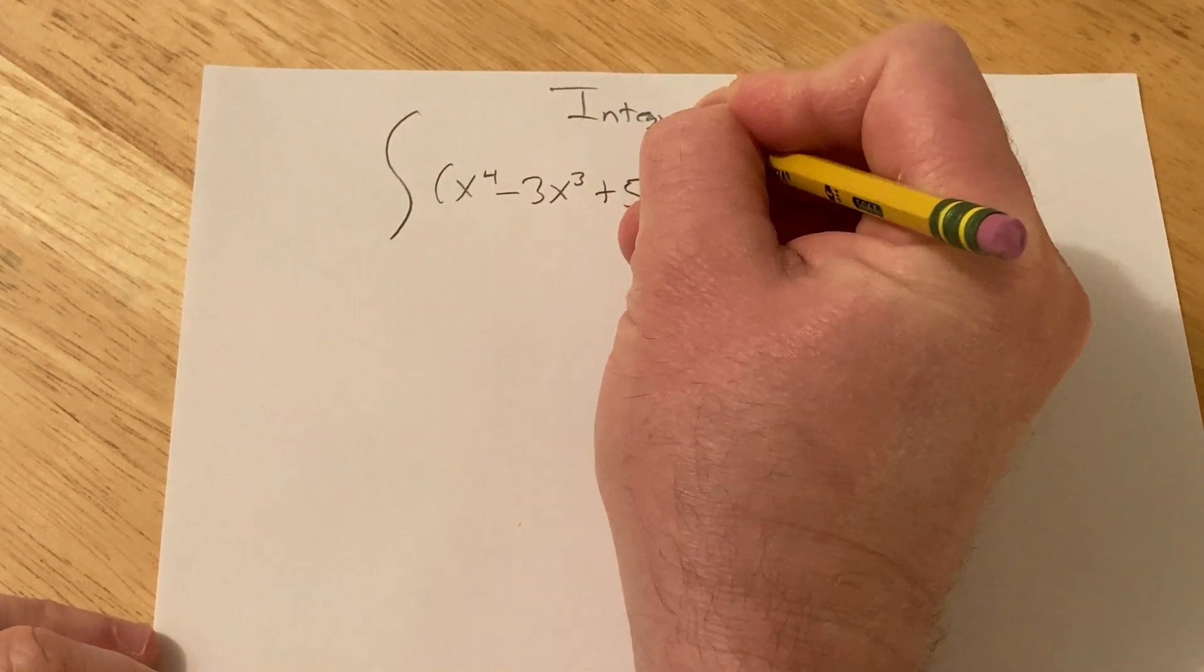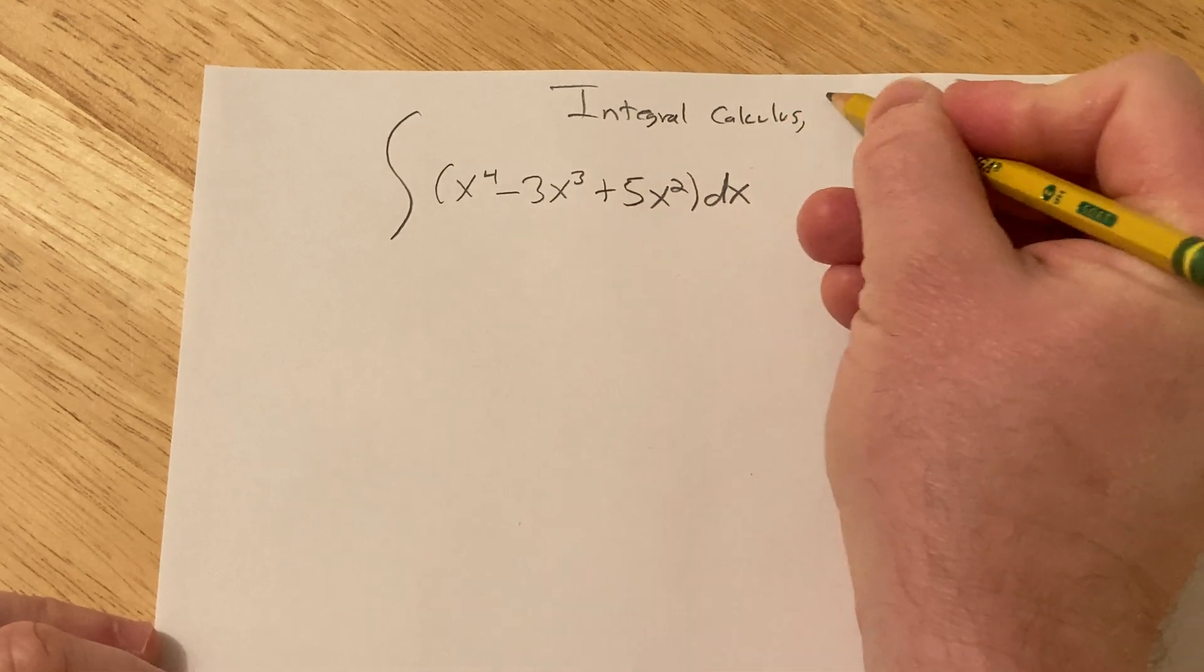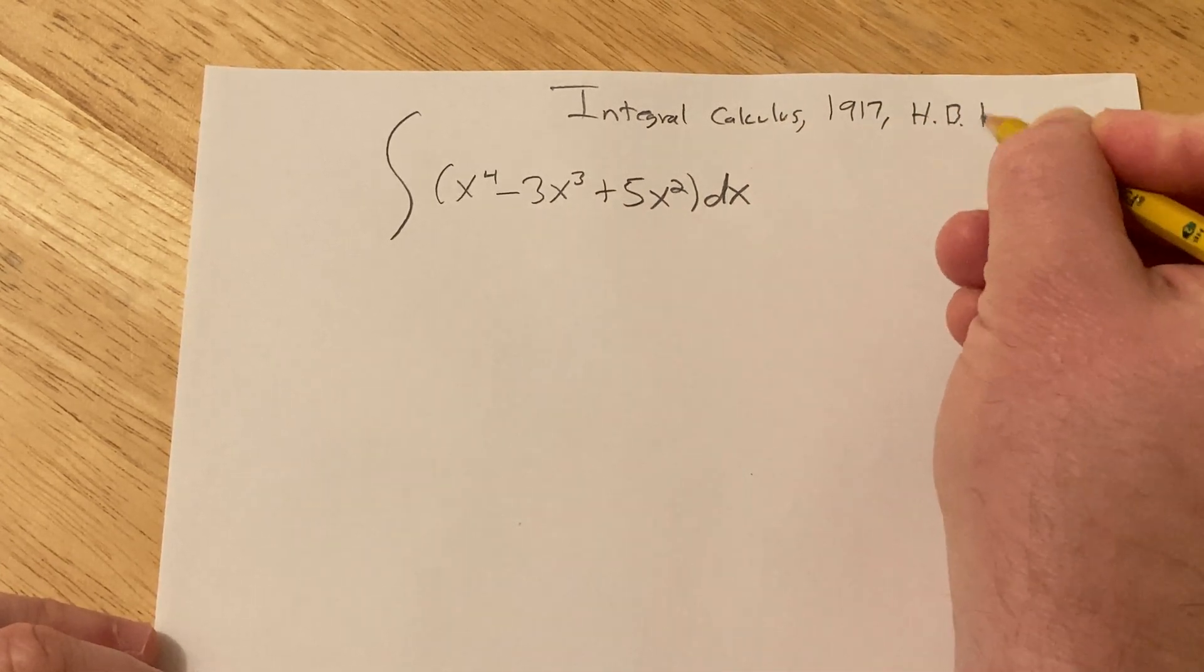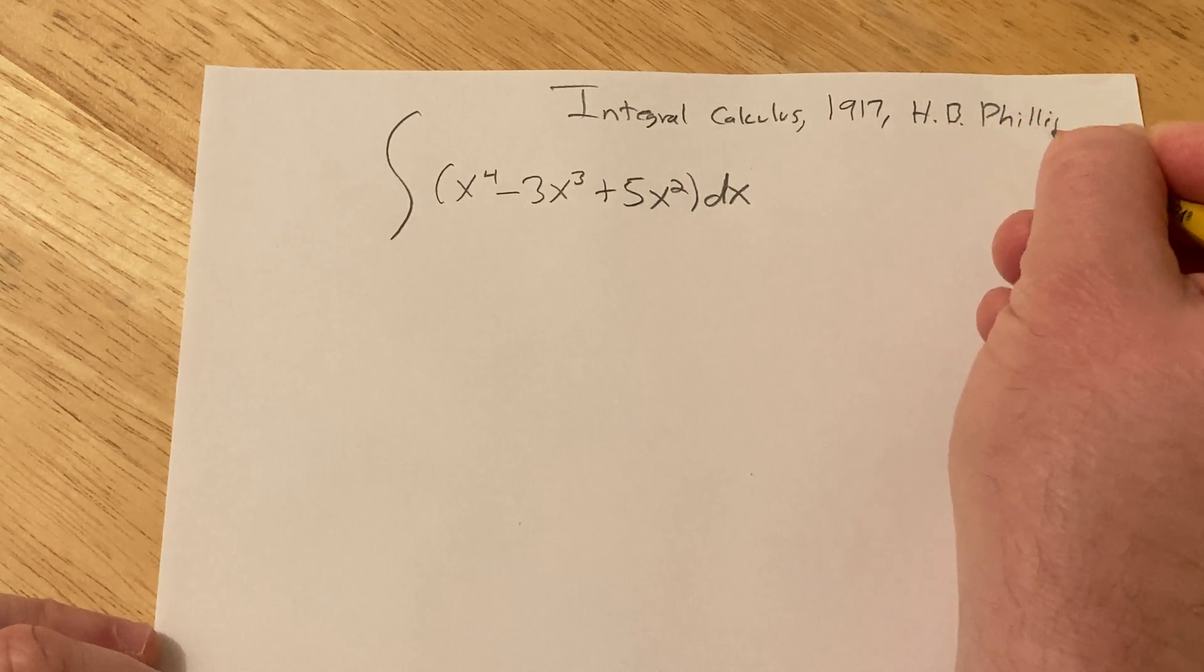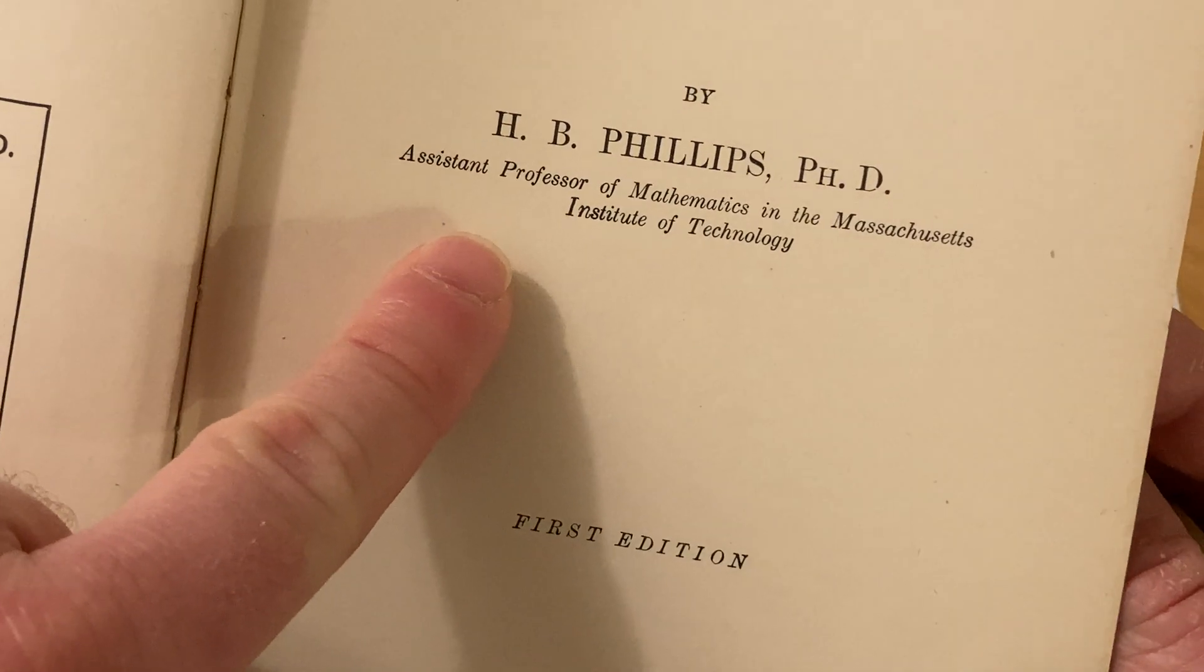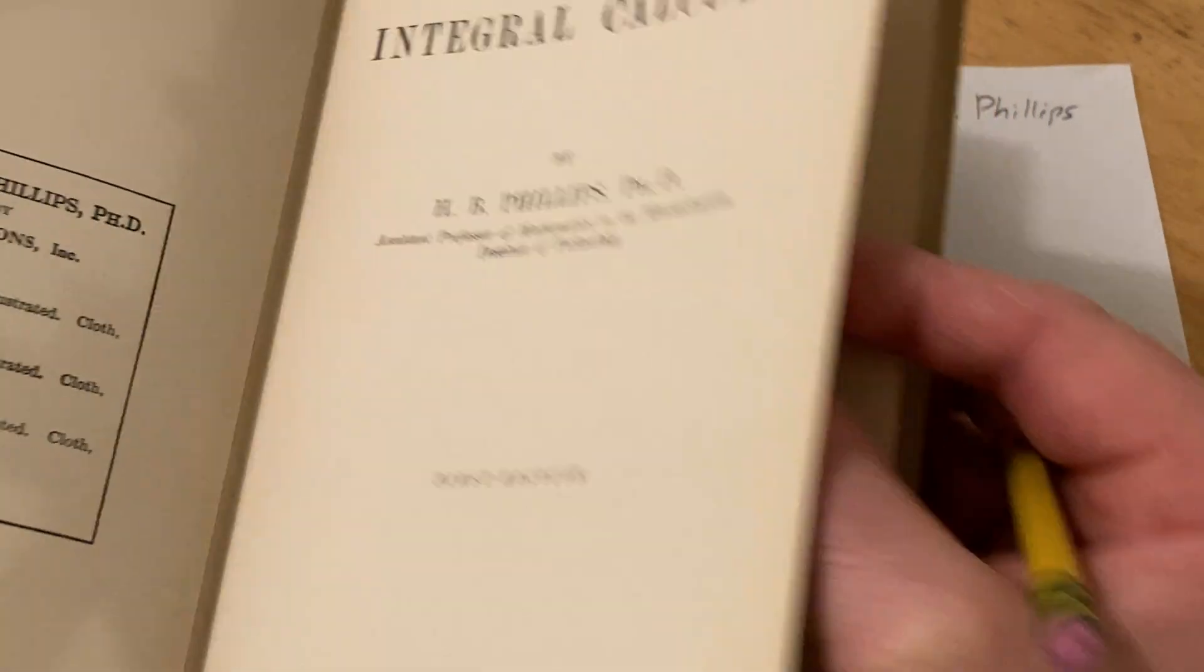It's called Integral Calculus, and it was published in 1917, and it was written by a person named H.P. Phillips, and he was an assistant professor at the Massachusetts Institute of Technology. H.P. Phillips, and the book is called Integral Calculus.